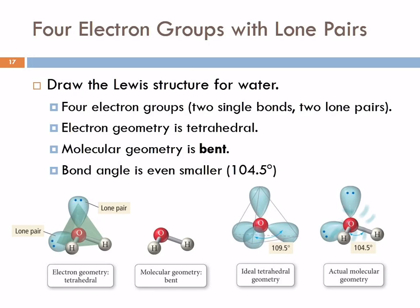Let's look at water. We look at the Lewis structure. We count the number of electron groups: one, two, three, four. So this is a tetrahedral electron geometry.